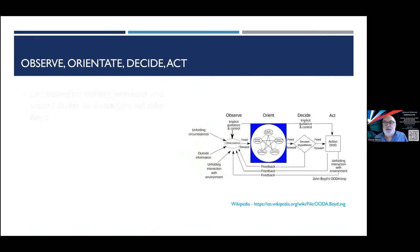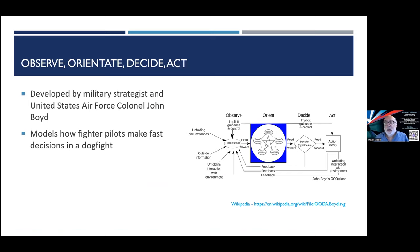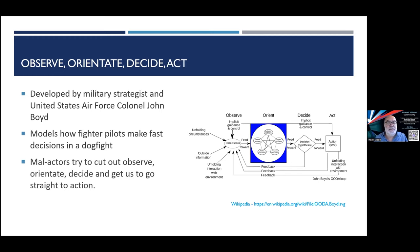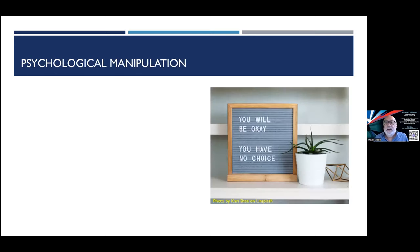American military strategist John Boyd studied how fighter pilots make decisions in a dogfight and developed OODA: Observe, Orient, Decide, Act. It happens very quickly but is a conscious process. Malactors try to get us to cut out the Observe, Orient, and Decide steps and go straight to Act — bypassing rational thinking entirely.